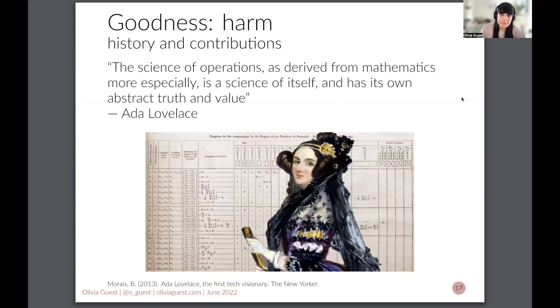So here is an example where Ada Lovelace is seen to have defined the field of computer science in the 1840s before it existed. So she's credited as being the first programmer. I think she should also be credited as being the creator of modern computer science. The science of operations as derived from mathematics more especially is a science of itself and has its own abstract truth and value. I would say that's a proposal for a new science and we call it computer science. She called it the science of operations.